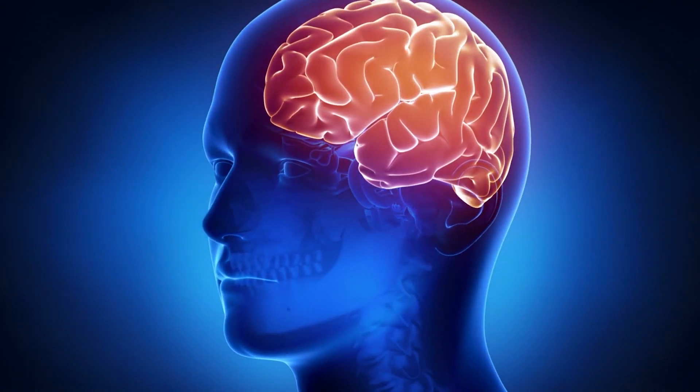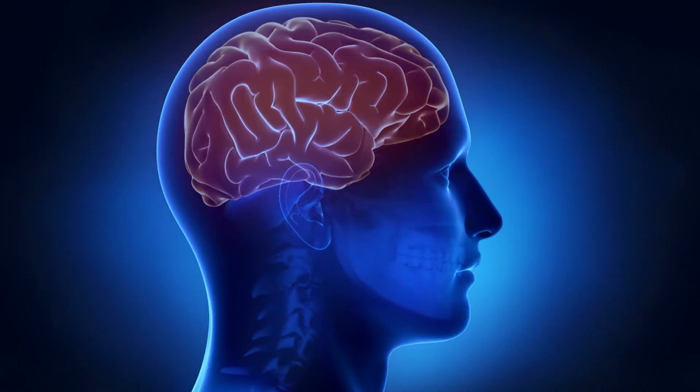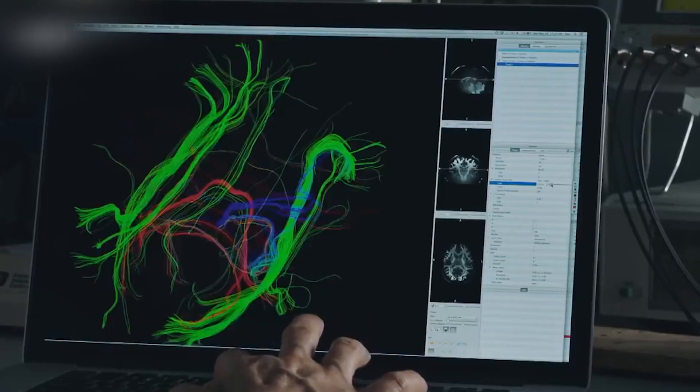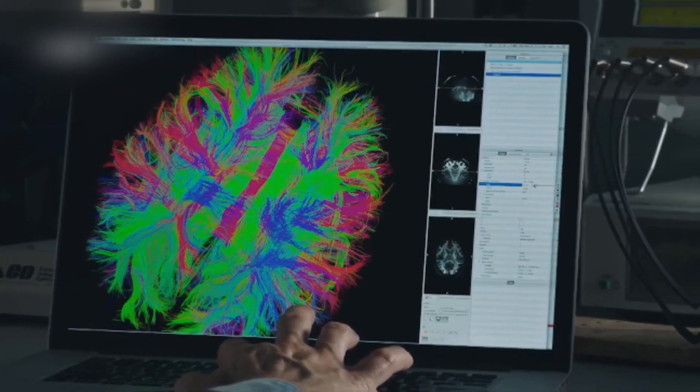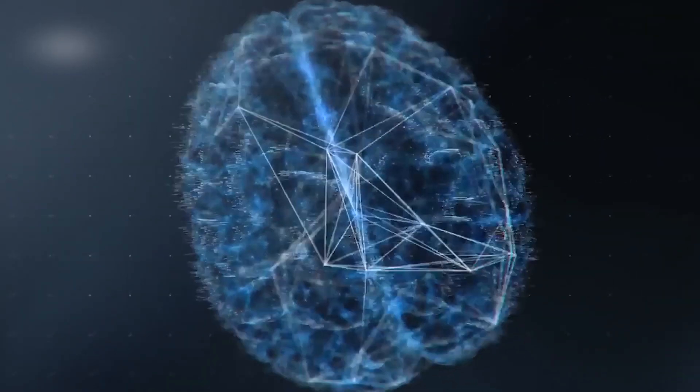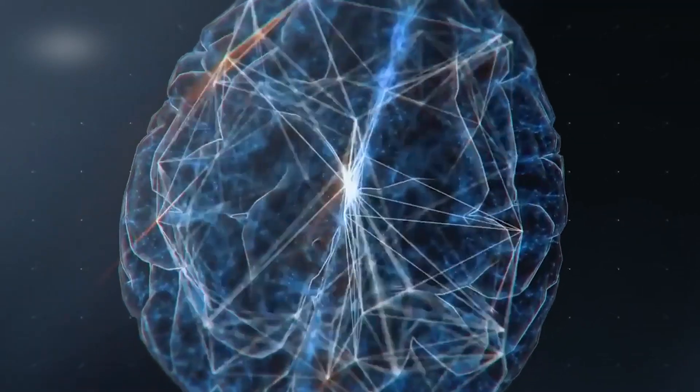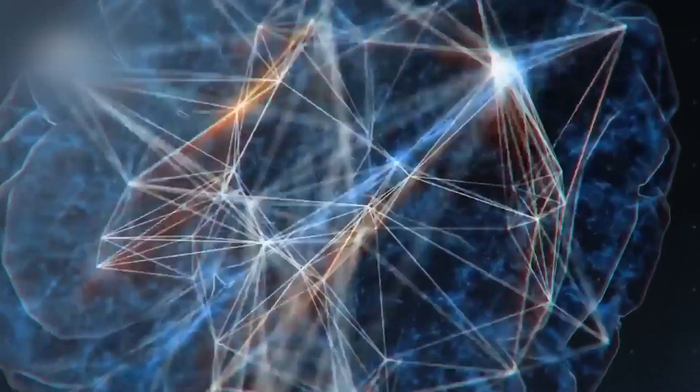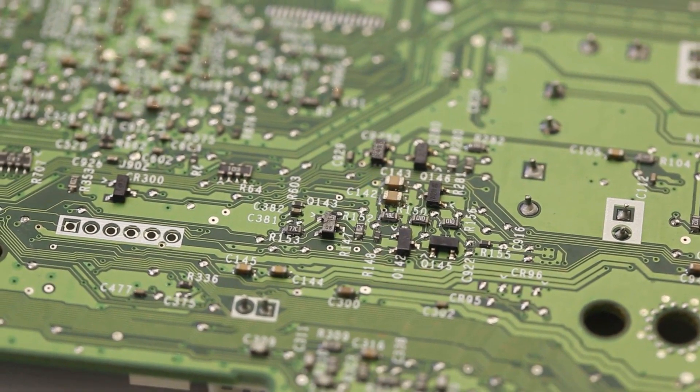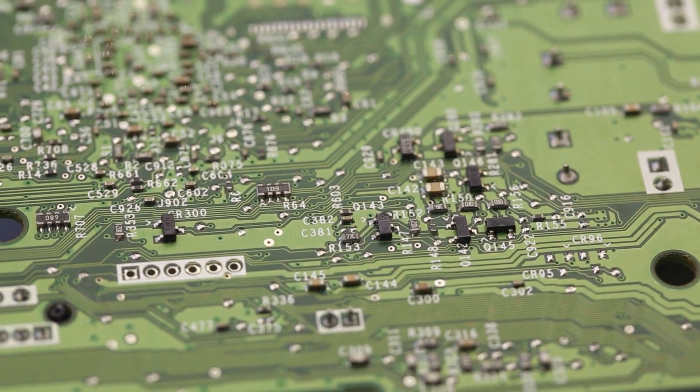Now the question is, how does Neuralink work? How will the connection between the human brain and the computer chip be established? Well, to really understand how Neuralink will work, we have to understand the human brain first, and then take a look at how Neuralink's brain chip will establish its connection.